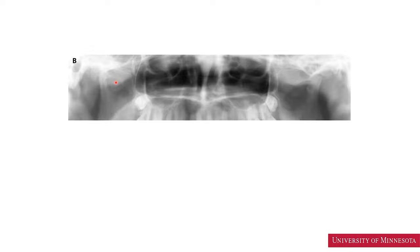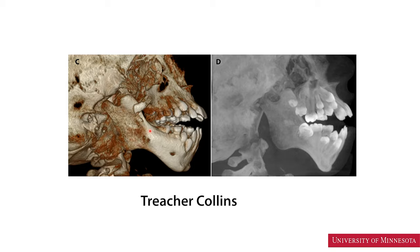This shows unilateral hypoplasia of the condylar head — this condyle is flattened and on this side we can see a much smaller condylar head representing hypoplasia. This is a Treacher Collins patient. In this patient, we see a hypoplastic condylar head. In addition, we can find hypoplastic zygomatic bone and zygomatic arch. In this patient, the zygomatic arch did not even form.